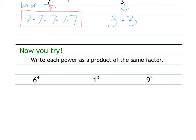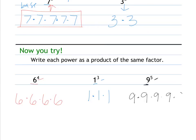Give these three a try — you can pause and come back. The base is six, and we want that base four times: six times six times six times six. Base is one, three times: one times one times one. Base is nine, five times: nine times nine times nine times nine times nine. That's it — just showing that you know what the base and the exponent represent.